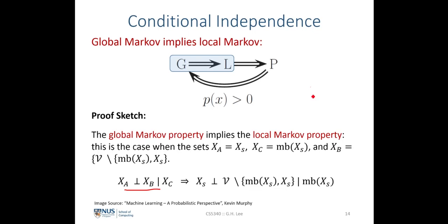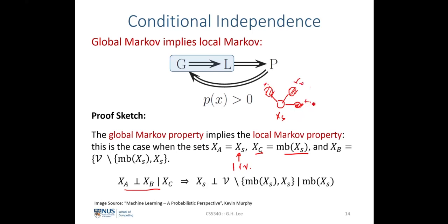Now let us let xA be equal to xS, where xS is one specific random variable, and let us further define xC as the Markov blanket of xS. This means that suppose we have a random variable xS in the graph, and the Markov blanket would be all other random variables that are one degree of connection away from xS itself — for example, x1, x10, x11 — all under the Markov blanket of xS.